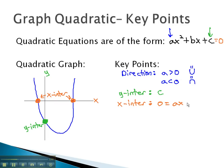0 equals ax squared plus bx plus c is quickly solved by either factoring, completing the square, or the quadratic formula.